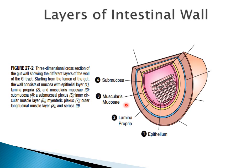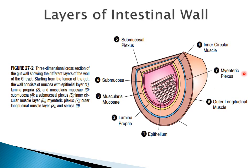Then we have the submucosal layer. In this submucosa there is a plexus called the submucosal plexus, or Meissner's plexus. Then we have the innermost layer of muscle, which we call the inner circular layer, and then the outermost layer, which is the longitudinal muscle layer. Between these two muscular layers there is a nerve plexus called the myenteric plexus. The outermost layer of the intestine is the serosa.